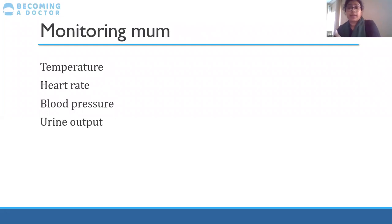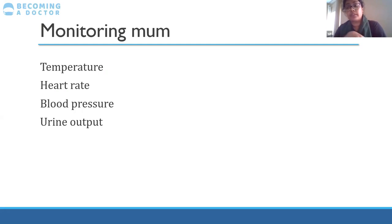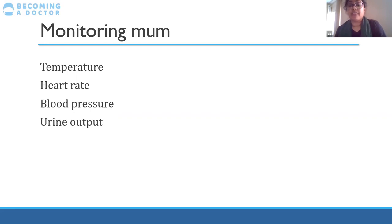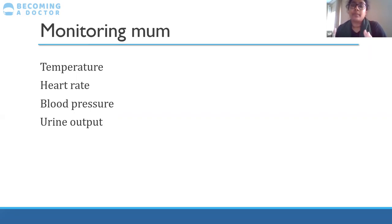During labor we also monitor the mother's wellbeing. Labor is incredibly stressful both mentally and physically for mother and fetus. It's important to monitor temperature, heart rate, blood pressure, and urine output — women can become very dehydrated. They will often spike temperatures in labor, which isn't necessarily infection but might be. Labor is often when women first present with high blood pressure, which is important because of its association with preeclampsia.